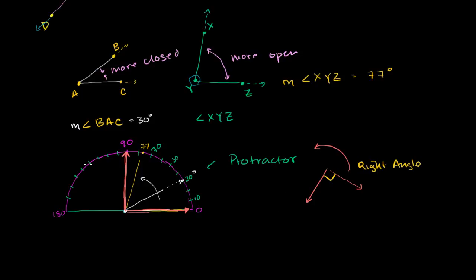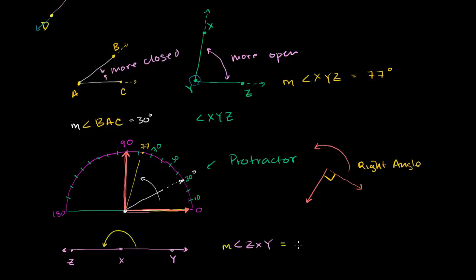As you go even wider — wider and wider — you get all the way to an angle where the two rays form a line. So let's say this is point X, this is point Y, and this is point Z. You could call this angle ZXY, but it's so open that it has formed an actual line — Z, X, and Y are collinear. What we have right over here is a 180 degree angle. The measure of angle ZXY is 180 degrees. You can actually go beyond that: going all the way around the circle gets you to 360 degrees, and you could keep going round and round — you'll see more of that in trigonometry.